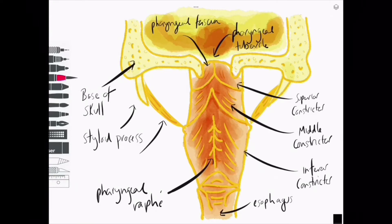The stylopharyngeus muscle originates on the styloid and inserts on the thyroid cartilage. It has a different function to the other pharyngeal muscles, elevating the pharynx in swallowing.